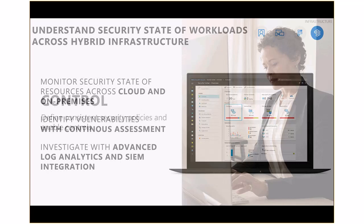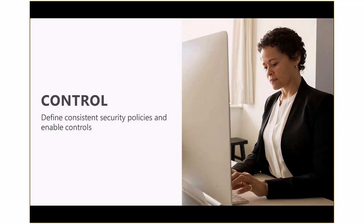That brings us to the second area of security management — control. This area is all about one, the formulation of very clear security policies — what we expect the policies to be to address the organization's security requirements — and then the implementation of very clear controls that basically implement the essence of those policies in the tools and technologies we offer. Over the next few slides, I'll walk you through the different solutions we have to implement this control phase in the intelligence security management area.